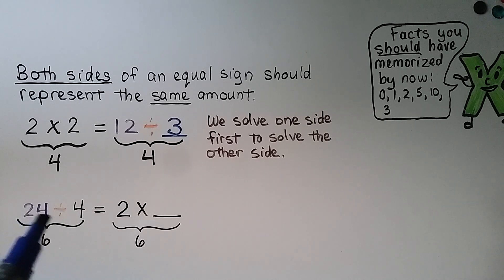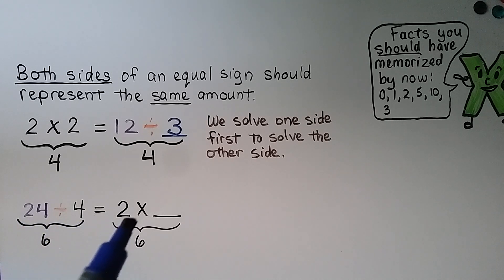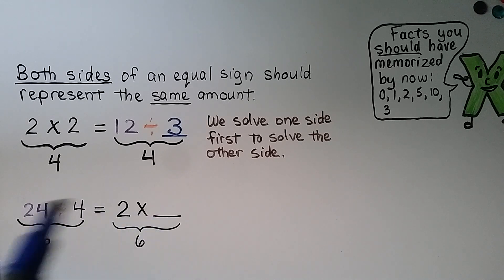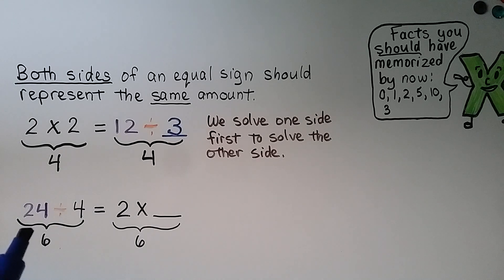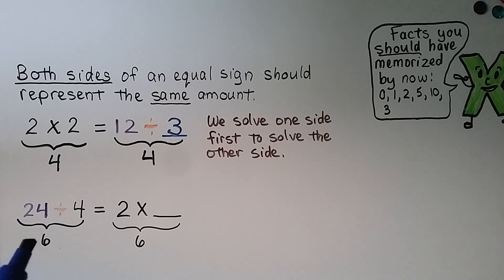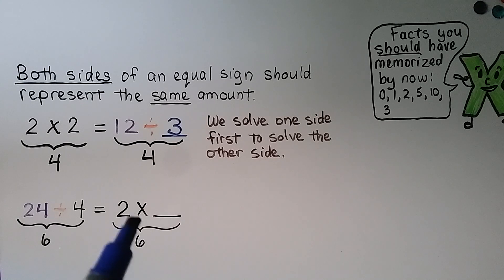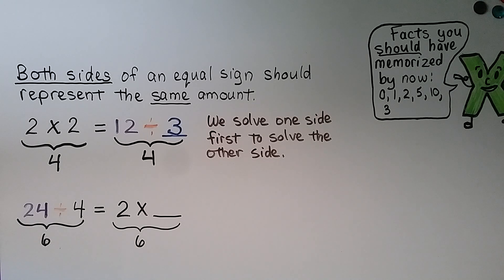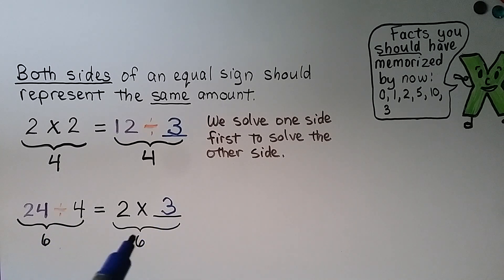Here we have twenty-four divided by four is equal to two times some number. We solve the left side first: twenty-four divided by four is equal to six, because six times four is equal to twenty-four. That means the right side must also equal six, so two times some number is equal to six. If you said three, you're right. If there's an unknown amount on one side of the equal sign, we can solve the other side to help us.